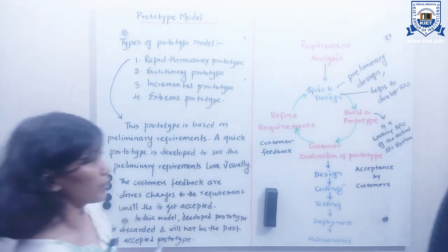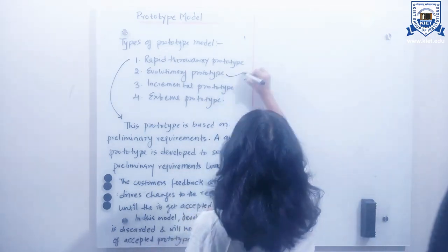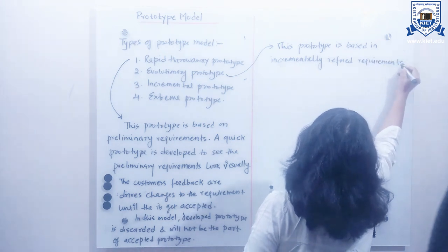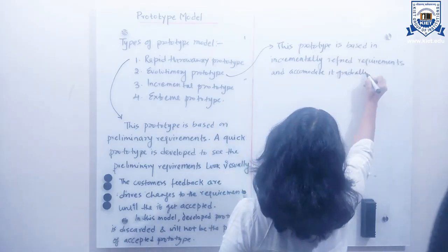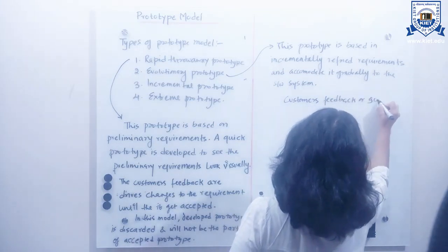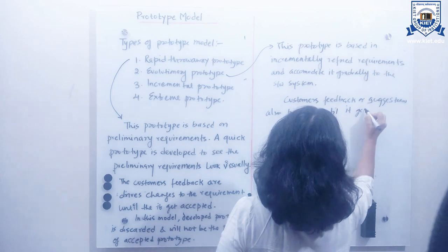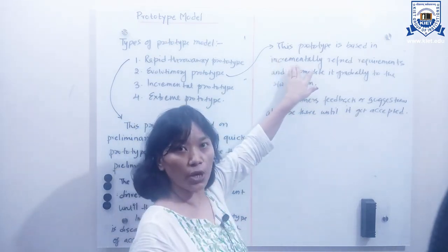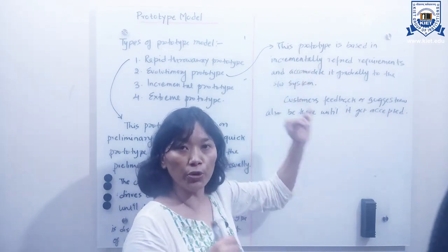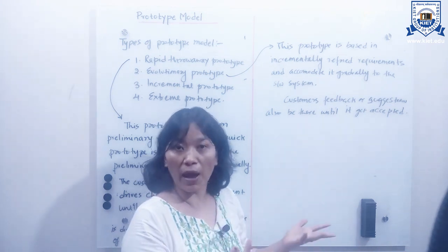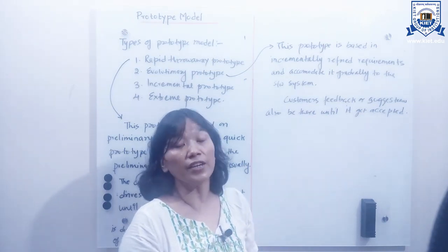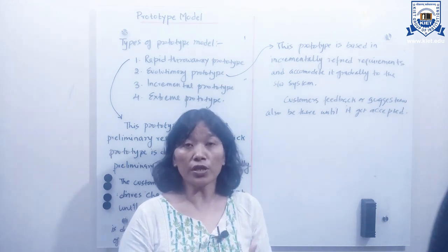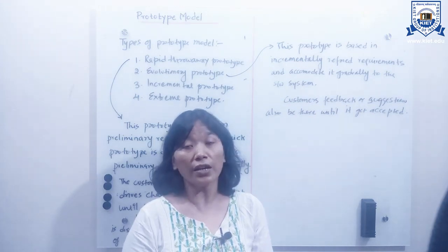The second prototype type is evolutionary prototype. In the evolutionary prototype model, requirements are incrementally refined and every time the refined requirements get accommodated into the software system, customer feedback and suggestions are also considered until the prototype gets accepted. These kinds of prototypes are good for projects where the technology being used is new and not well understood.